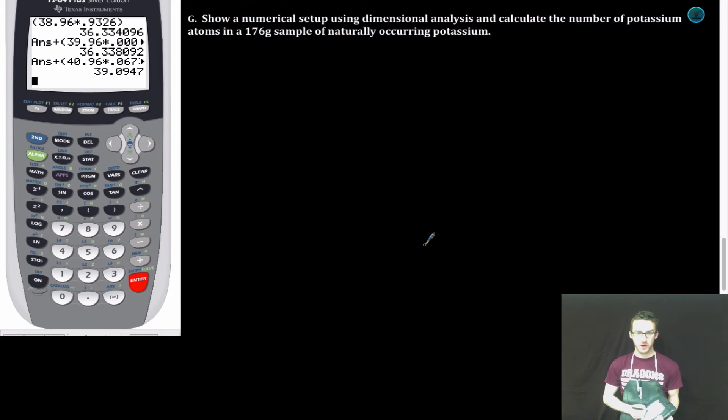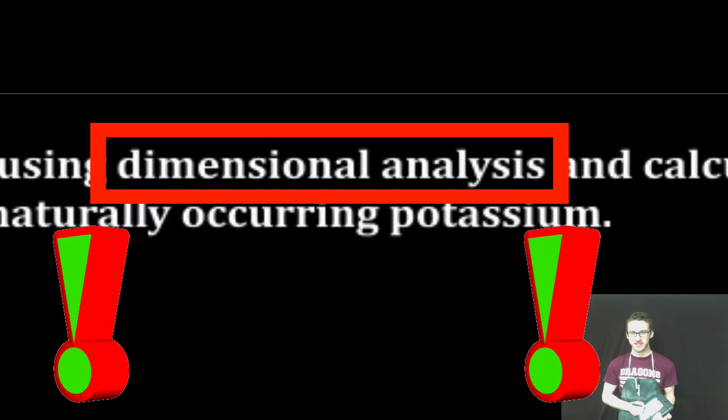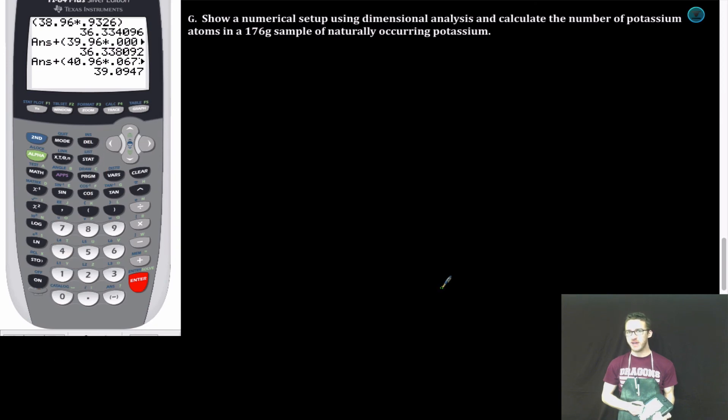Part G. Show a numerical setup using dimensional analysis and calculate the number of potassium atoms in a 176 gram sample of naturally occurring potassium. Remember, always start your conversion with the amount that you provided. First thing I'm going to do, convert this to number of moles. Recall that the relationship between one mole of an element and its mass in grams comes from the periodic table.